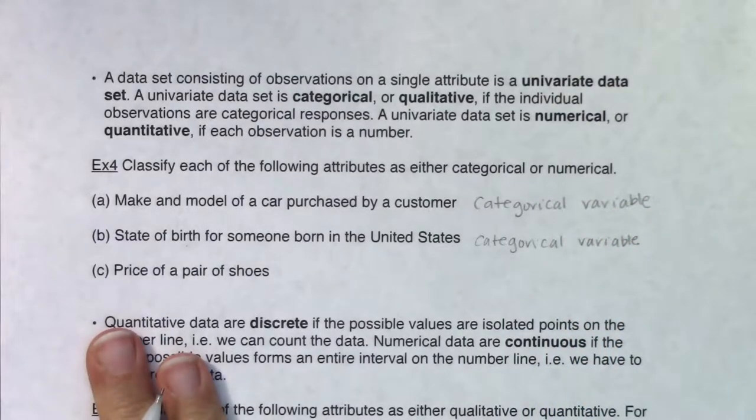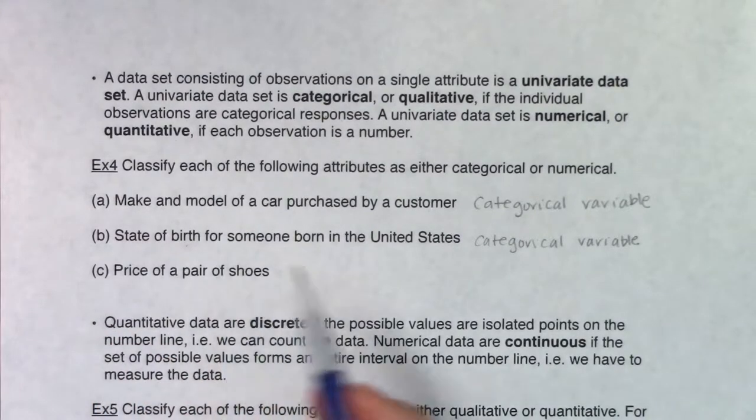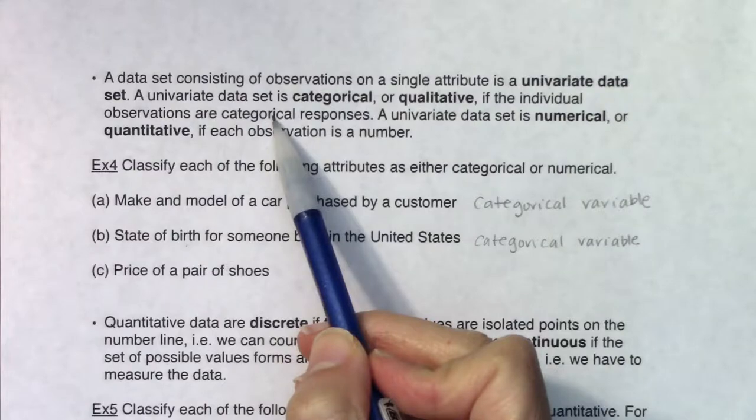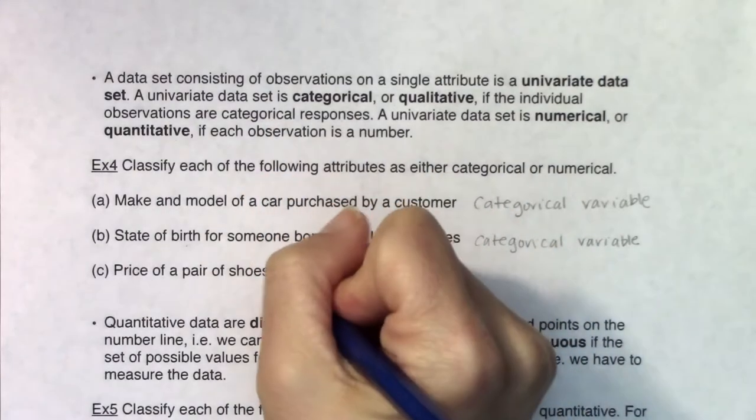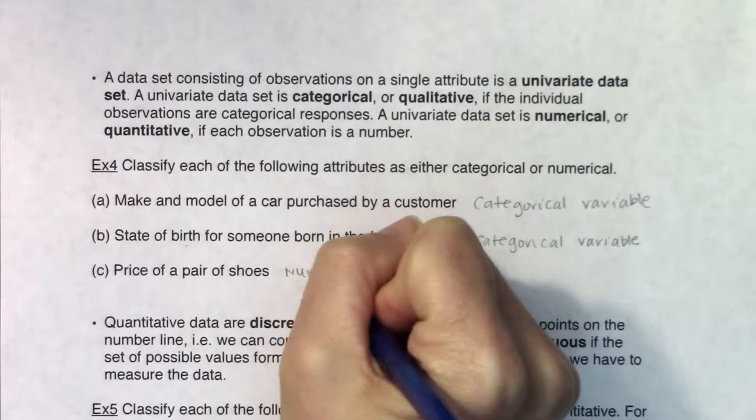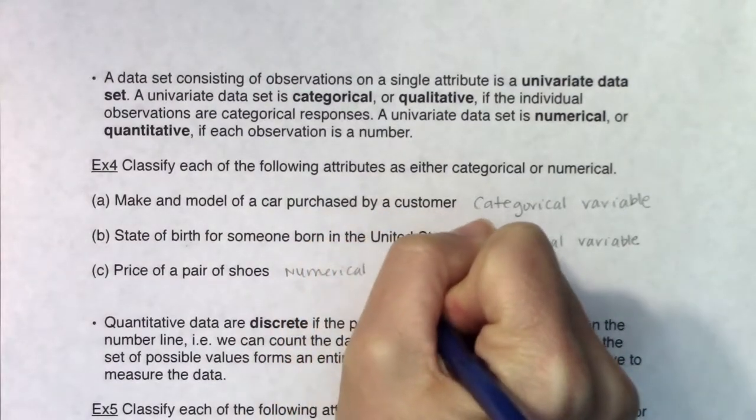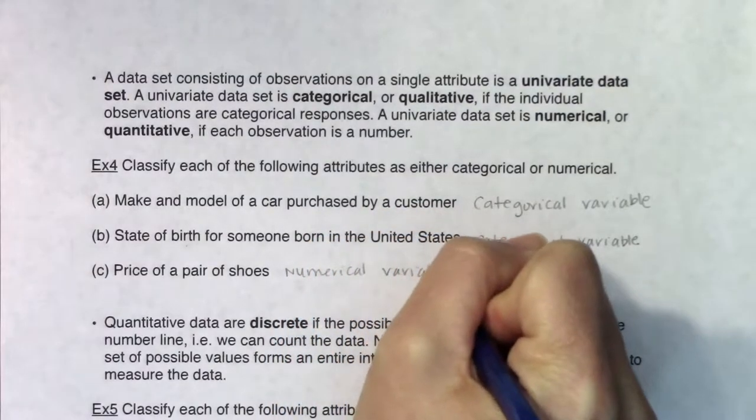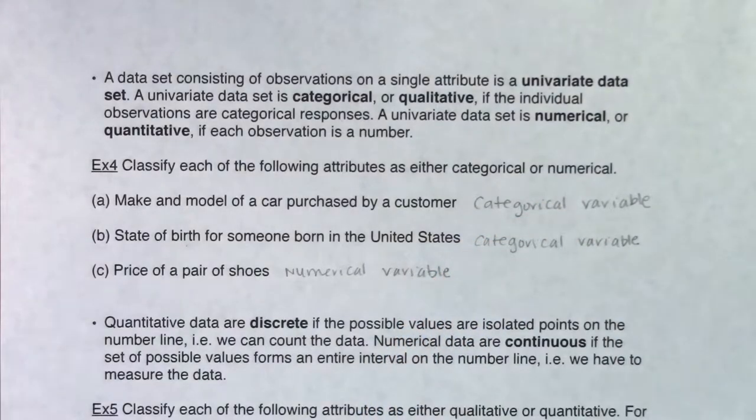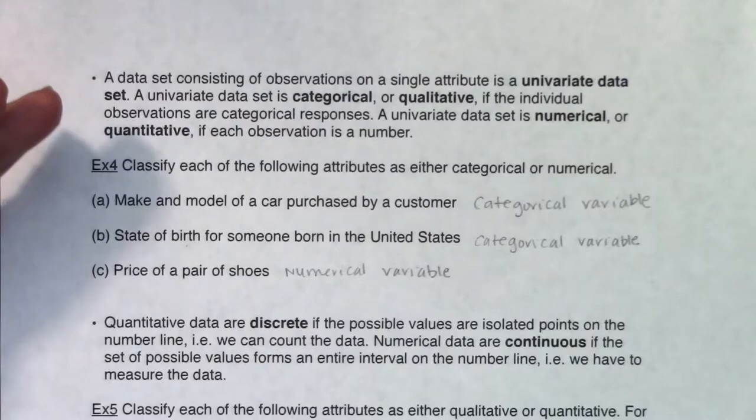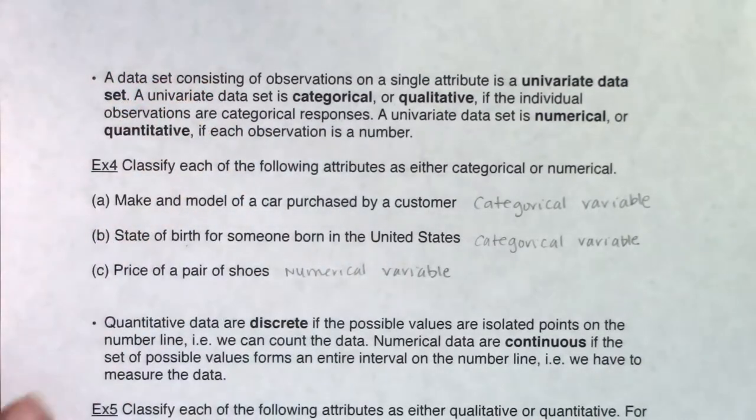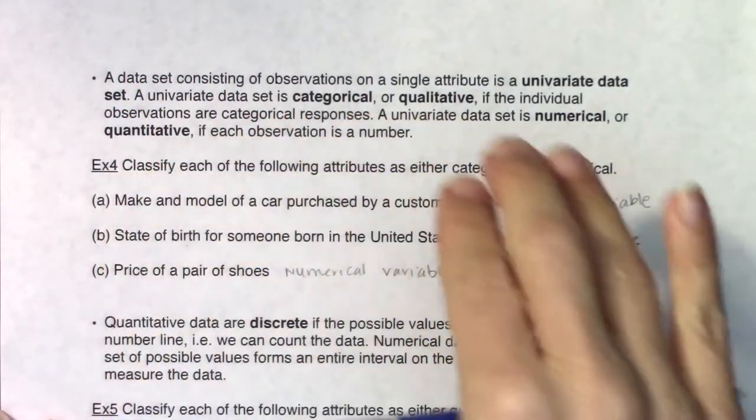In terms of the price of a pair of shoes, if I ask you what was the price of your last pair of shoes, are you going to give me a categorical response or a number? You're going to give me a number, so this is a numerical variable. This is the first breakdown we have of our variables.